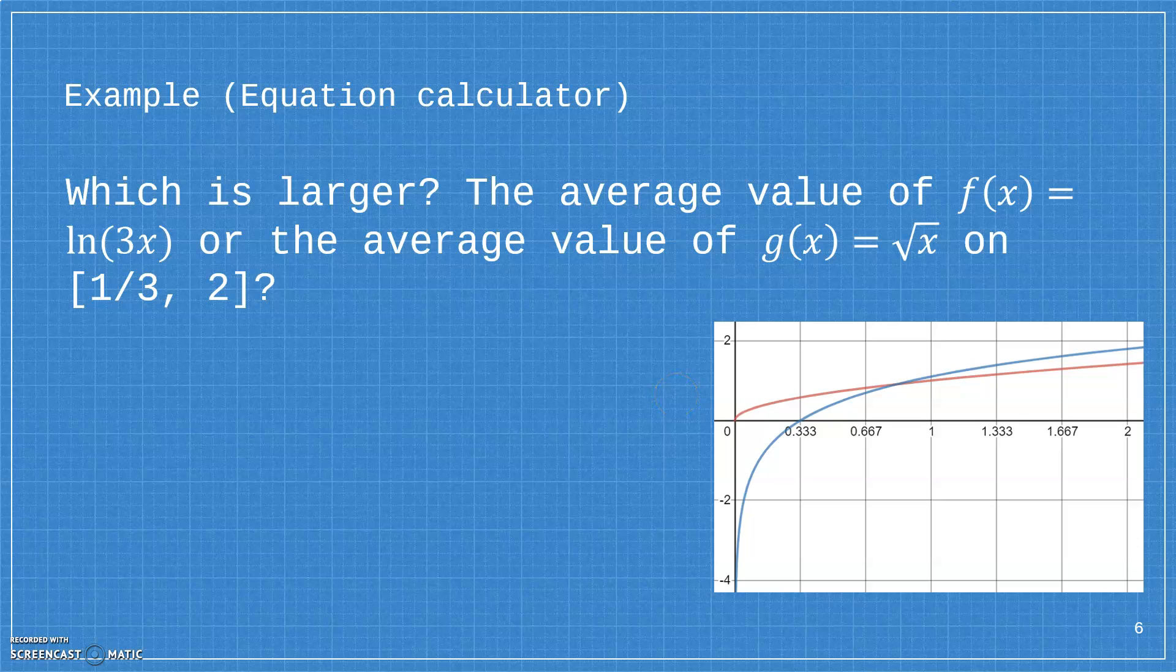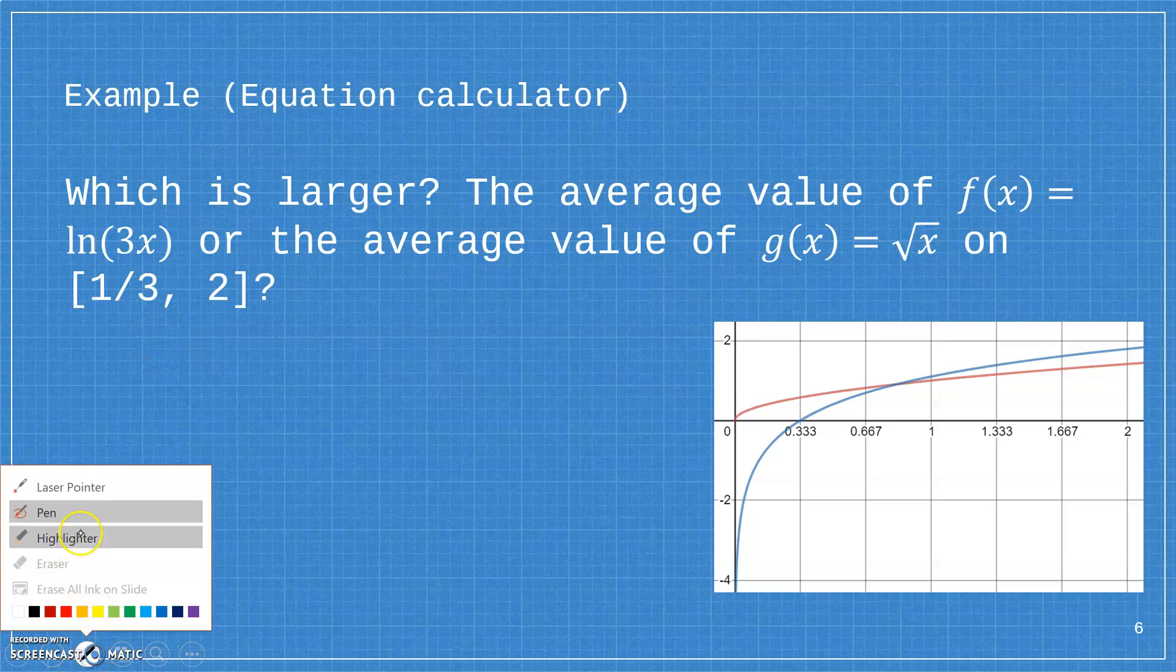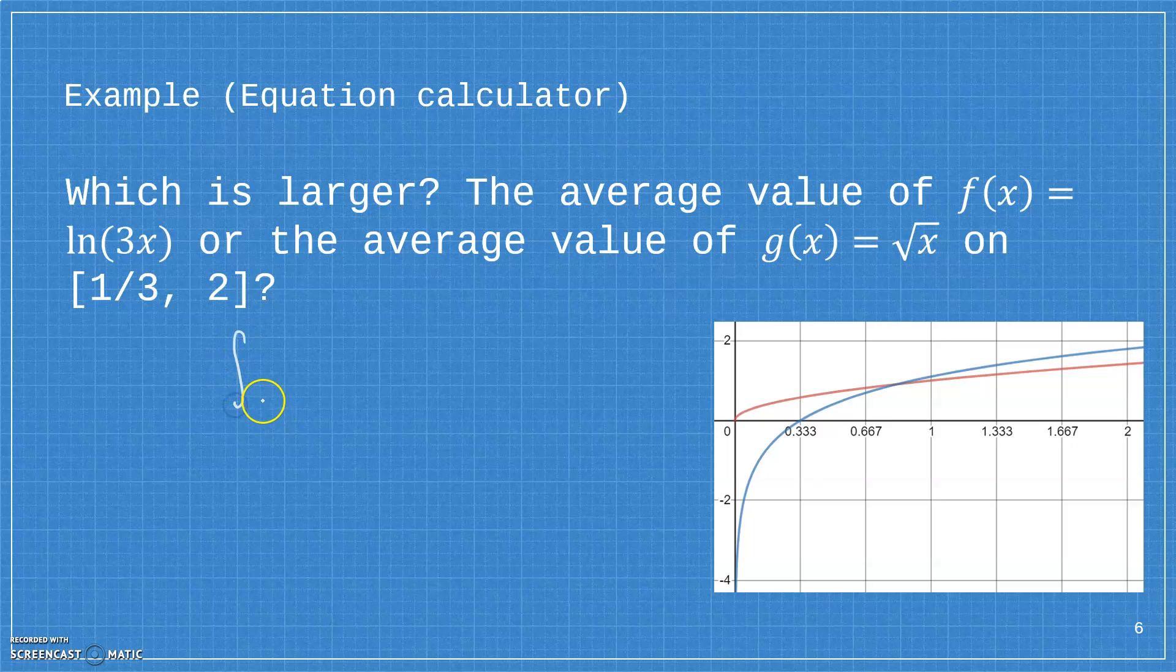So here's an example of a question that you might be asked while you have a calculator, which is larger, the average value of natural log of 3x or the average value of the square root of x on the interval from 1 3rd to 2. So I'm going to be doing the integral from 1 3rd to 2 of natural log of 3x. And I will then divide that by 2 minus 1 3rd. I will divide that by 5 3rds, or multiply it by 3 5ths would be another way of saying that.